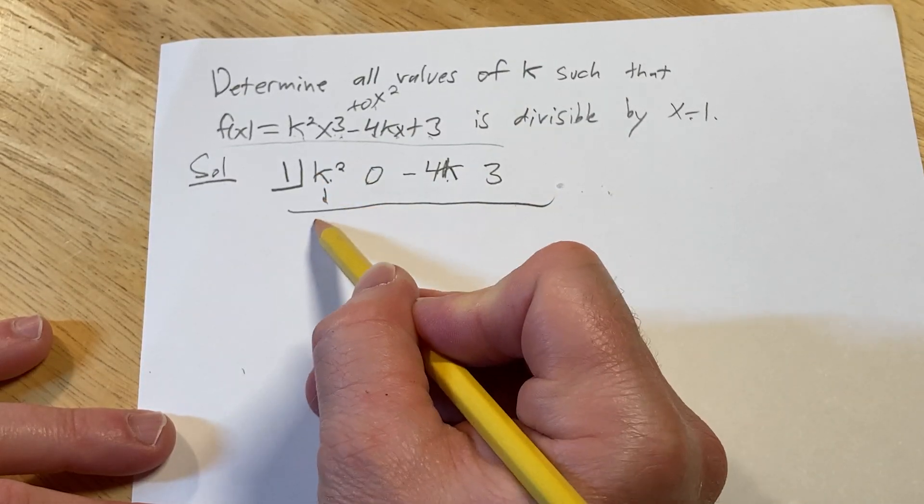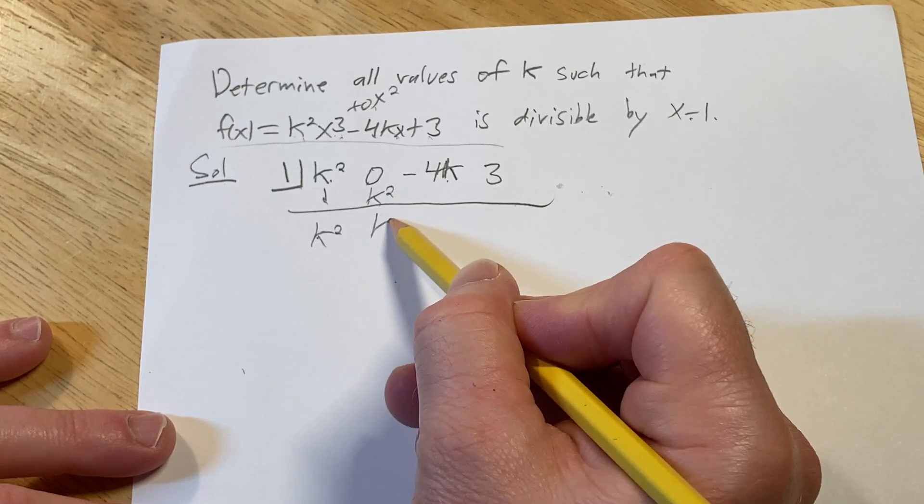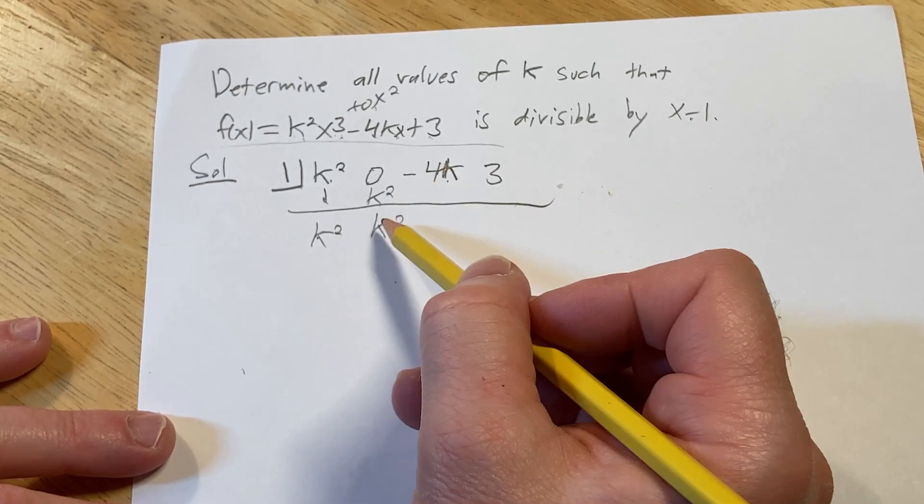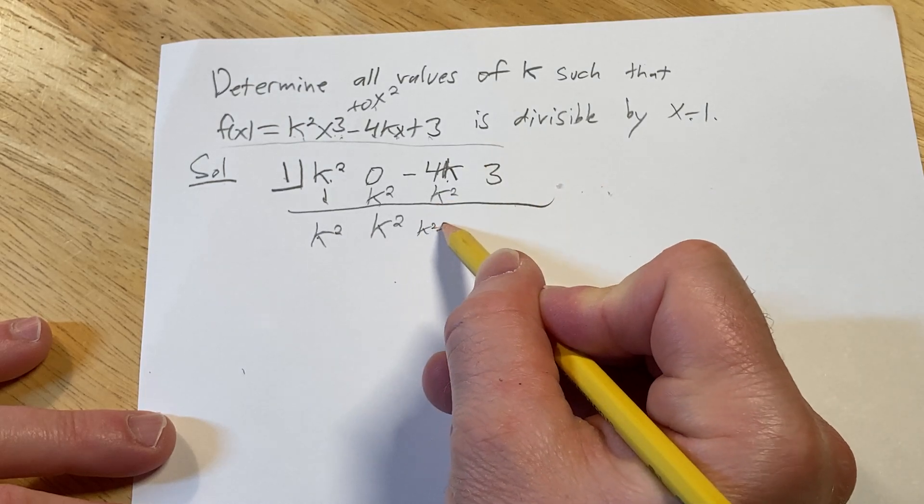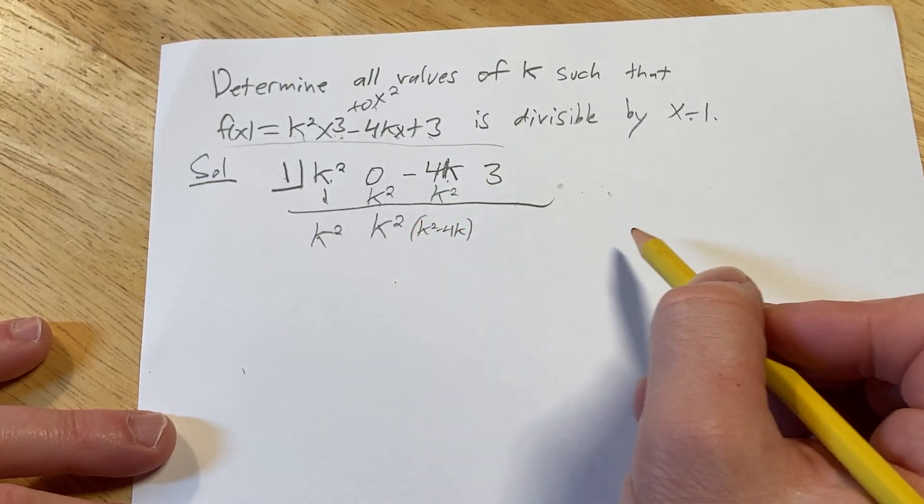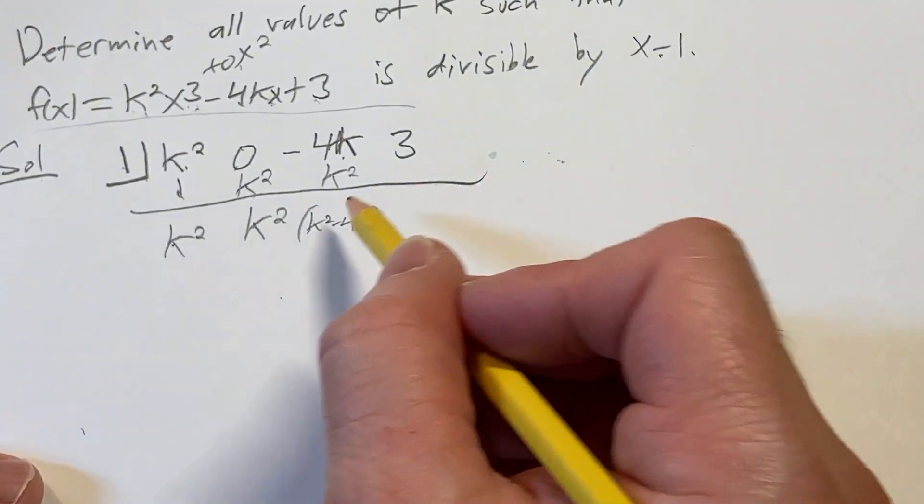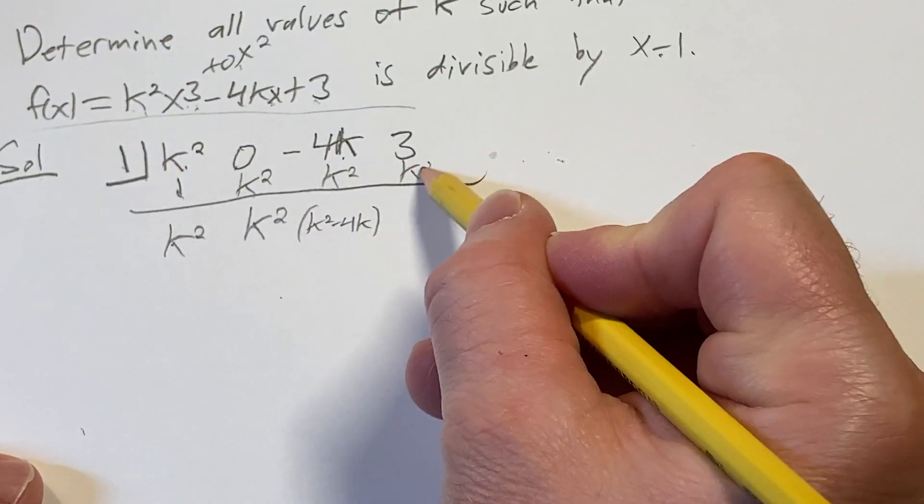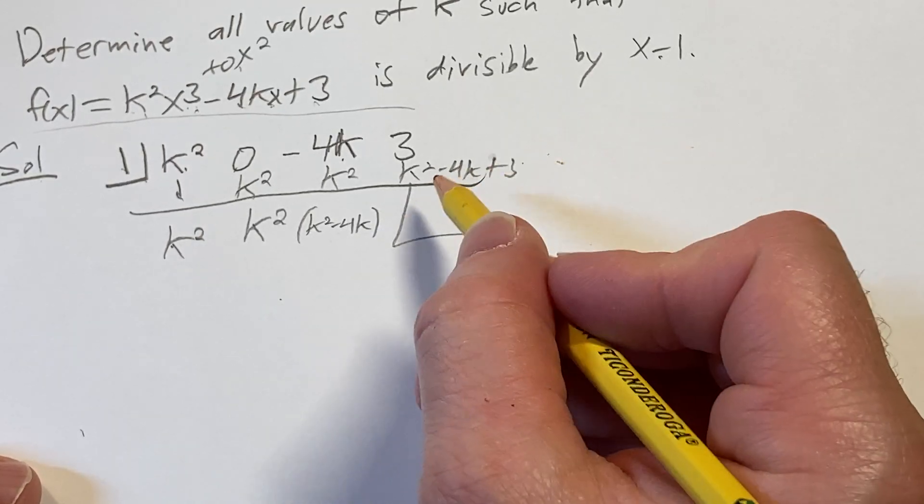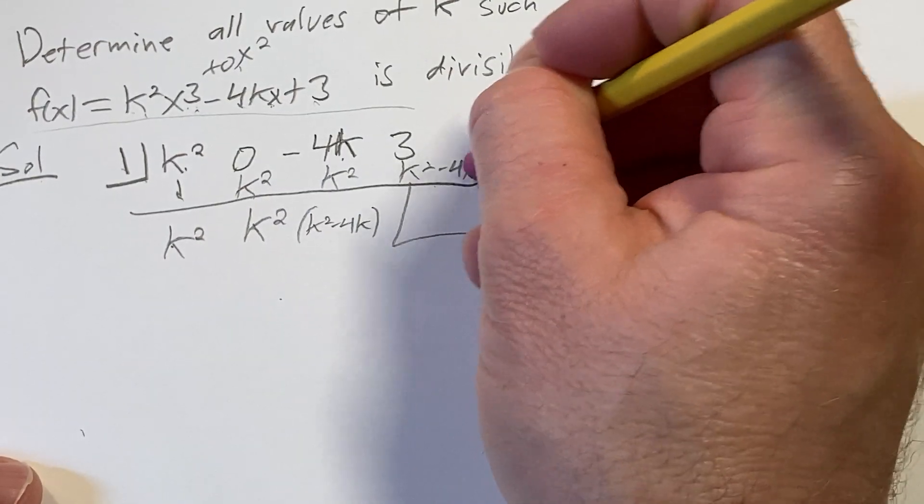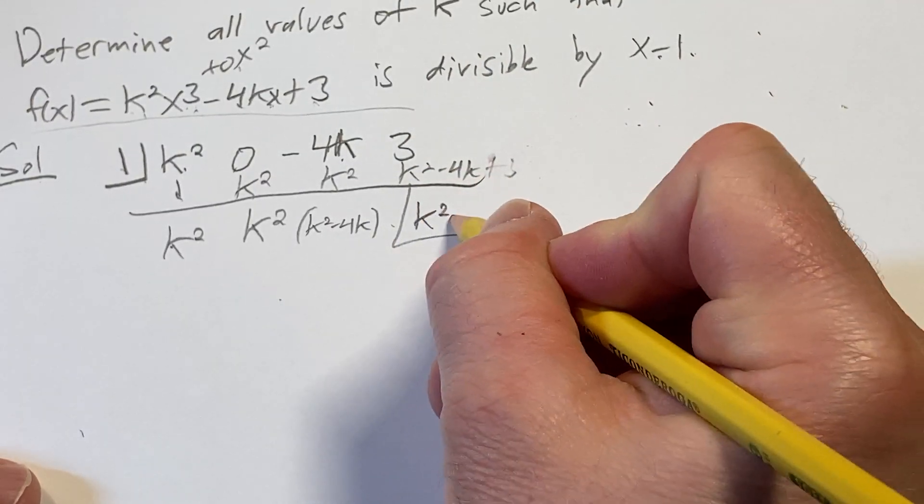First thing you do is bring down the k squared. Then you multiply k squared times 1 is k squared. So we add, so we get k squared. k squared times 1 is k squared. So we add, we get k squared minus 4k. I'm going to put it in parentheses just because it looks better. Then we multiply, so we get k squared minus 4k. And then you add and you get k squared minus 4k plus 3.